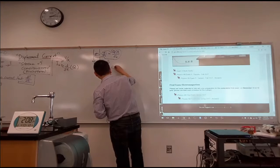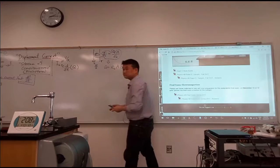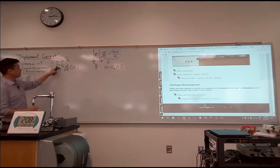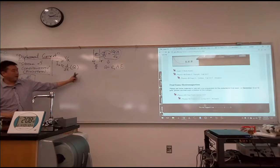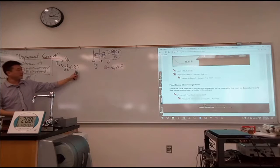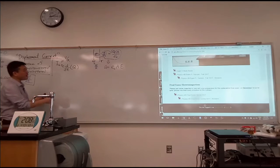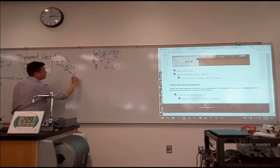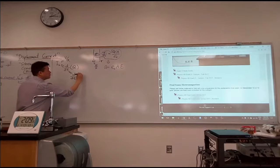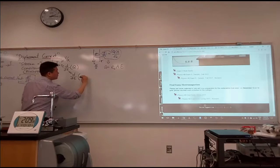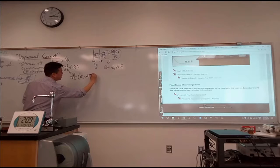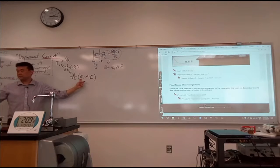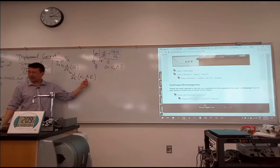All right, so epsilon naught times area times E. So continuing with this line of thought, I can take this, plug it in here, and see what happens. When I take this and plug it in here, I get rate of change with respect to time of epsilon naught A electric field magnitude. Epsilon naught is a constant, right? That's an electric constant. Area, it's a constant, right?